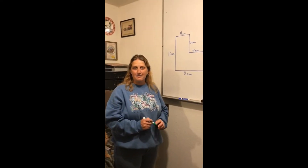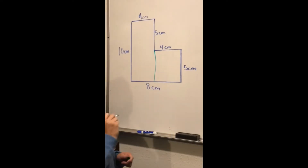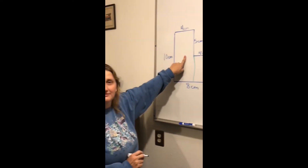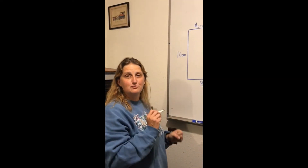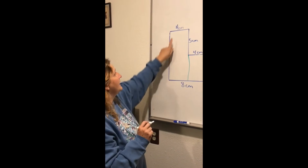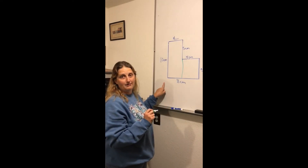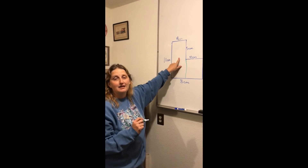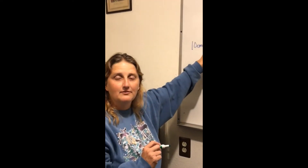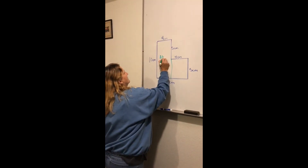Let's walk through this step by step. I decided to divide the shape vertically, so I'm going to draw my line vertically. To figure out the area of this first rectangle, I need the length and the width. I can see that 10 centimeters goes the entire length and 4 centimeters is the width. I can't use the 8 centimeters because that covers the whole polygon. So 4 times 10 equals 40 — I'll write 40 in the middle of that rectangle.